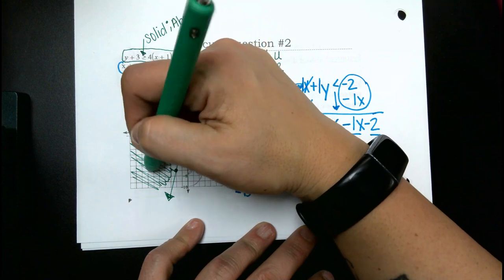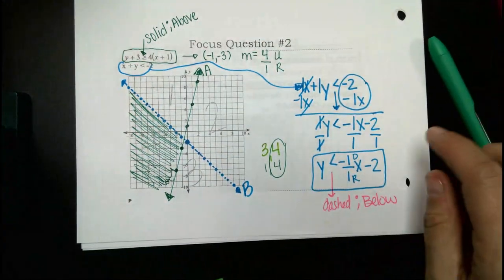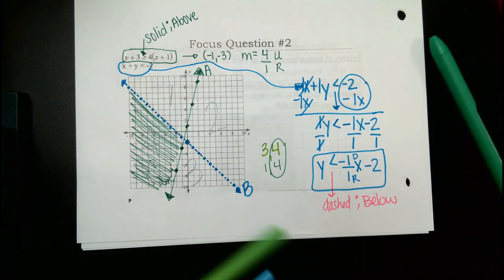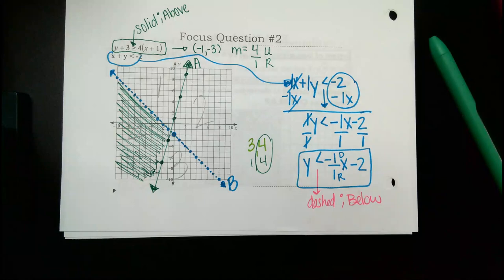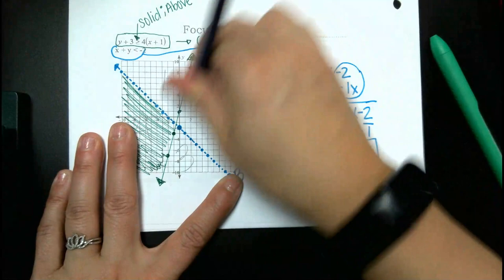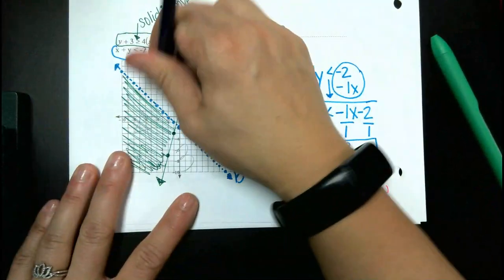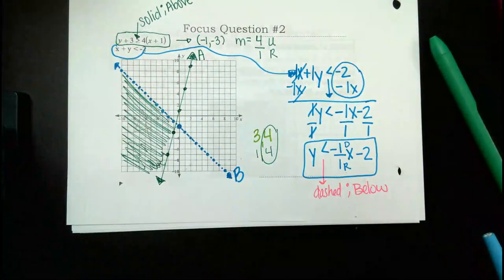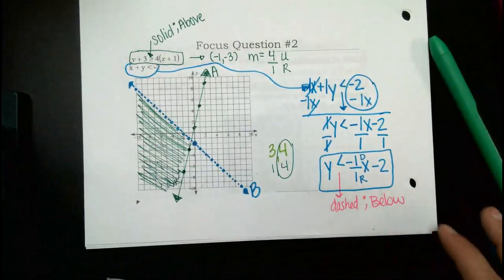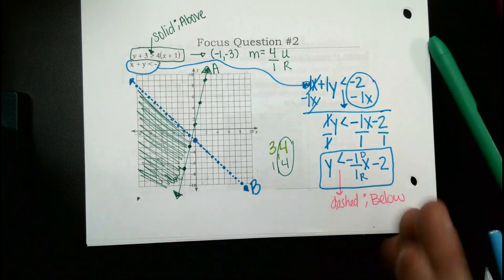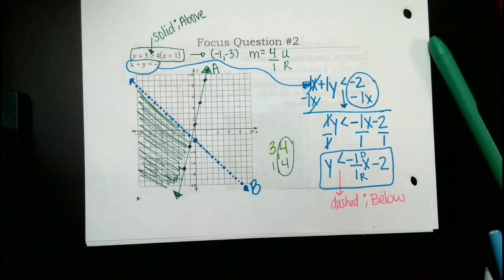Are we good with that? You can go ahead and erase those numbers to make it look a little bit cleaner, but you don't have to. If you leave them there, I can still tell where your shading is.